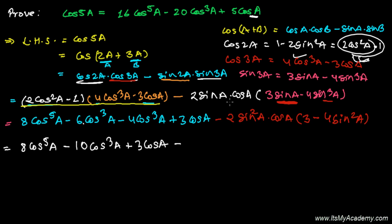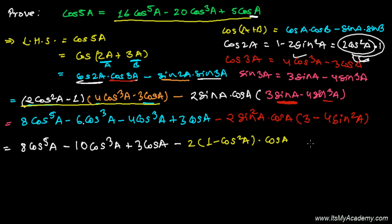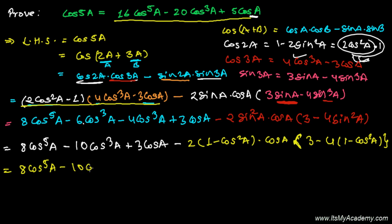I already told you our answer is in the format of cosine, so I'm going to convert sin²a. Since sin²a = 1 − cos²a, it becomes: 8cos⁵a − 10cos³a + 3cos a, minus 2(1 − cos²a)cos a times (3 − 4(1 − cos²a)).